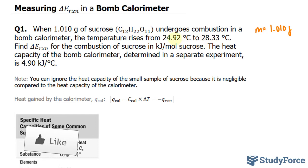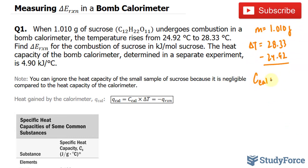The temperature goes from 24.92 to the following. So we can find delta T by taking 28.33 and minusing it from 24.92. We'll find that out in a moment. In addition, they give us the heat capacity of the bomb calorimeter, which I'll represent as C sub CAL, and that is equal to 4.90 kilojoules per degree Celsius.